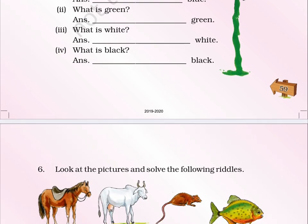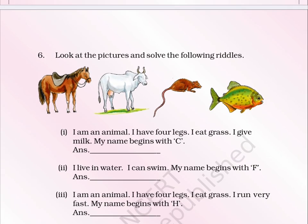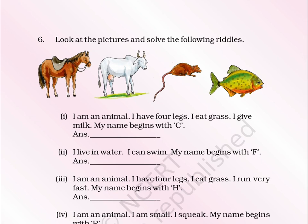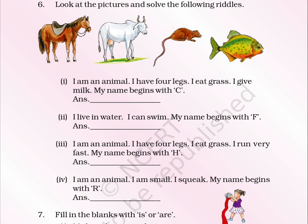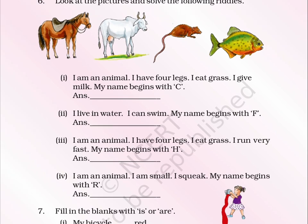Page No. 60. 6. Here are some pictures — solve the riddles by using these pictures. Pictures: 1. horse, 2. cow, 3. mouse, 4. fish. Riddle 1: I am an animal. I have four legs. I eat grass. I give milk. My name begins with C. Answer: ___. Riddle 2: I live in water. I can swim. My name begins with F. Answer: ___.